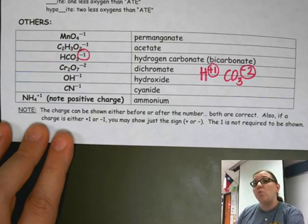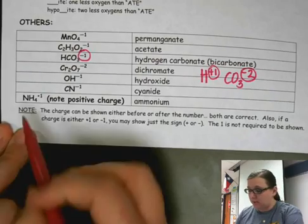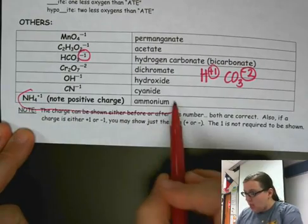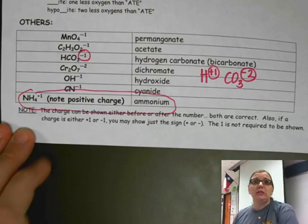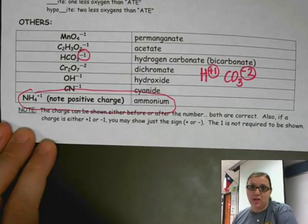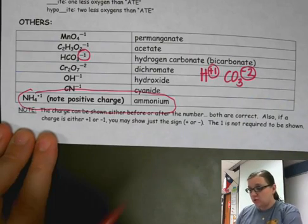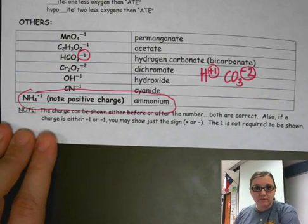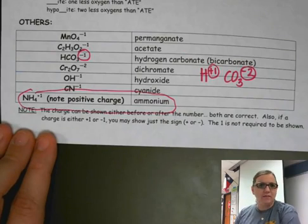We only have one polyatomic ion that has a positive charge, and that is ammonium. What happened there is that when those atoms group together, they actually lose an electron. Notice that all the rest of them gained electrons, which is why they have a negative charge — so be careful, ammonium is kind of the weird one with that positive charge.